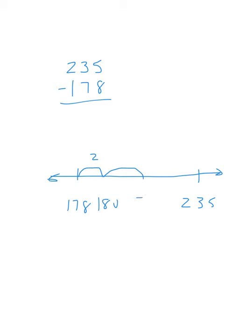180 to 200 is 20 more. 200 to 235 is 35 more. So if I add this all up, I have a total of 57.